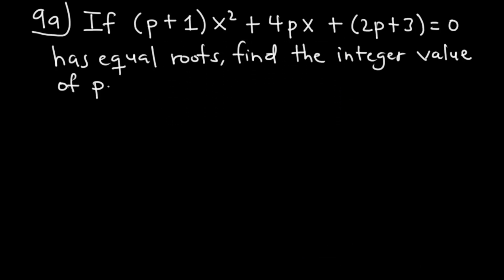In today's video we are going to solve WASSCE 2020 Elective Mathematics Paper 2 Question 9a. According to the question, we are to find the integer value of p if (p+1)x² + 4px + 2p + 3 = 0 has equal roots.